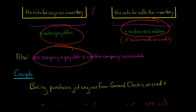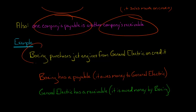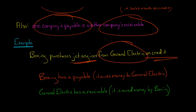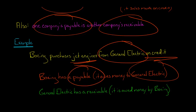Another important point to note is that one company's payable is another company's account receivable. Let's say we have the company Boeing, and they purchased some jet engines from General Electric on credit. Boeing is going to have an account payable because they now owe money to General Electric. They bought the inventory on credit and promised to pay General Electric at some point in the future, so Boeing has incurred a liability — they have a payable.